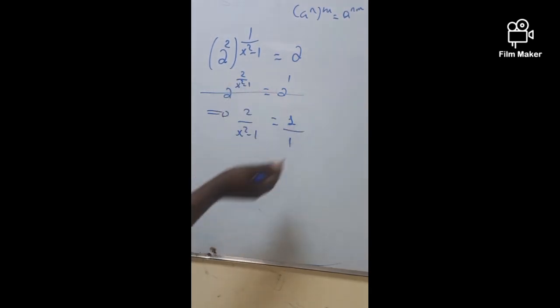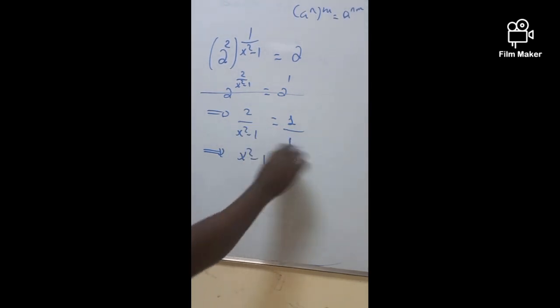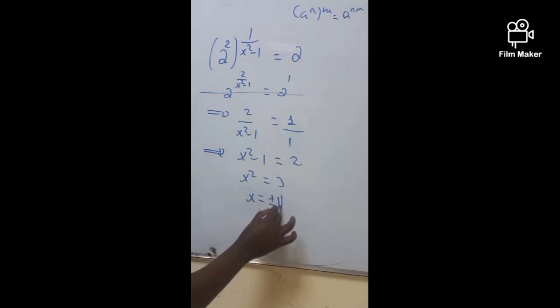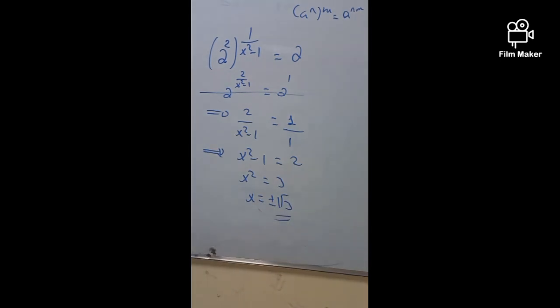And you can use the cross multiplication. And it is going to be x square minus 1 will be what? That is 2. And move 1 on the right, x square is going to be 3. And solve for x, x will be plus or minus square root of 3.